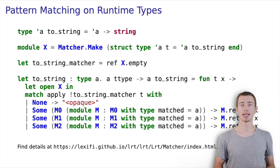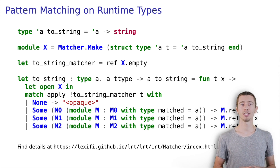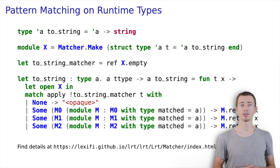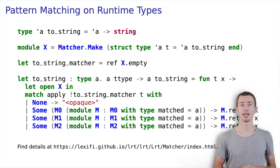For the purpose of this talk, we will quickly step through an example that matches runtime types for to-string conversion. We start by defining an alpha to_string type. Next, we create a matcher module that is able to return values of type alpha to_string. We also define a reference to an empty to_string matcher. We will later update this reference to add matching cases. Our generic to_string conversion function applies the matcher and uses the matched conversion function on the supplied value x. If no registered case matches the given runtime type, the function returns a placeholder string 'opaque'.